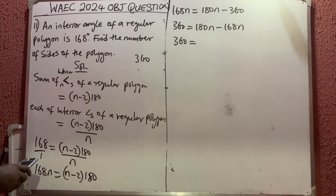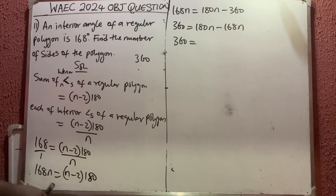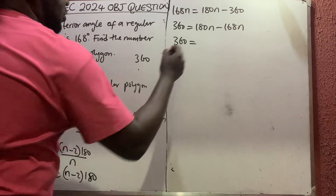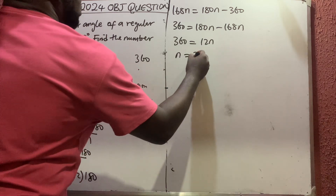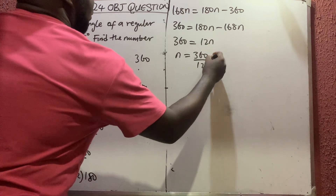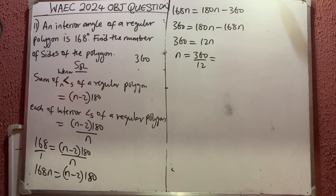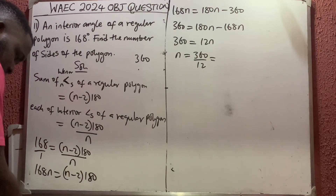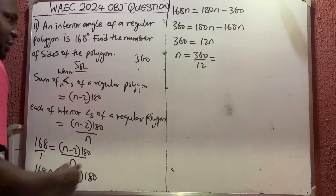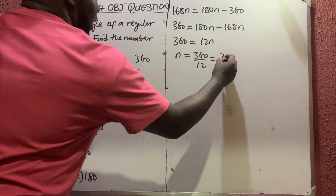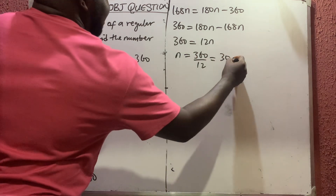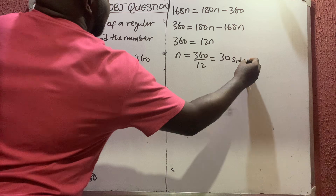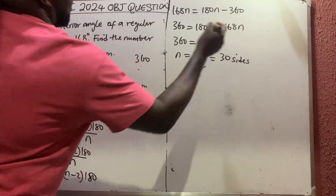Collecting like terms: bring 168n to the right and 360 to the left, giving 360 equals 180n minus 168n. That simplifies to 360 equals 12n. Dividing both sides by 12, we get n equals 30.